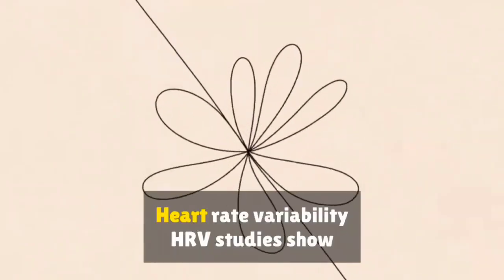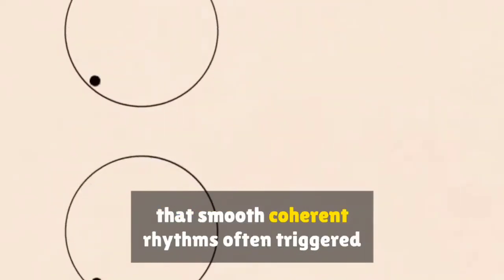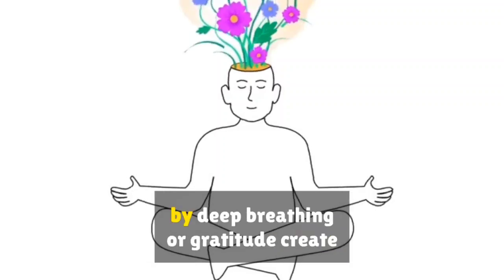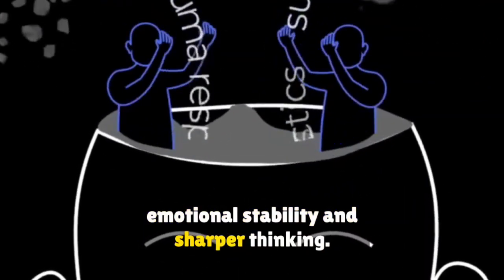Heart rate variability (HRV) studies show that smooth, coherent rhythms, often triggered by deep breathing or gratitude, create emotional stability and sharper thinking.